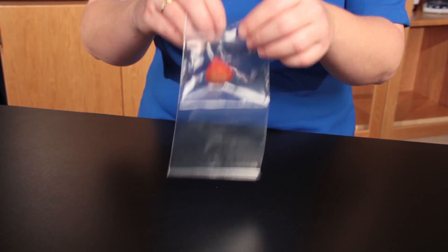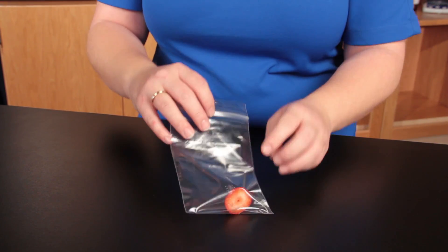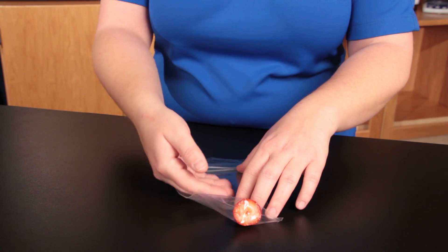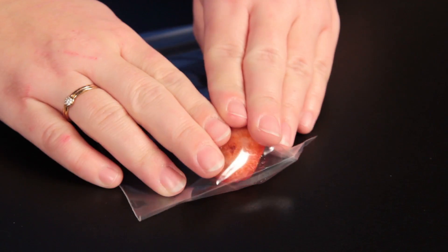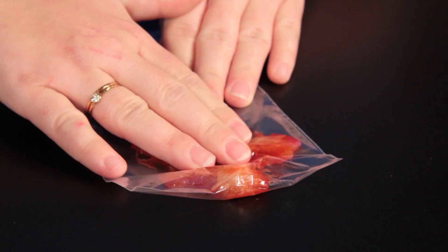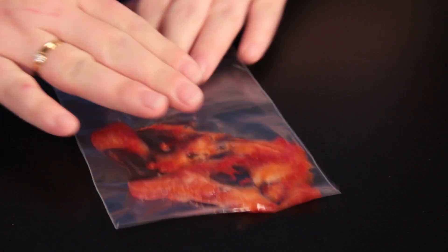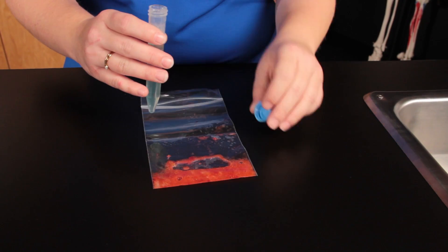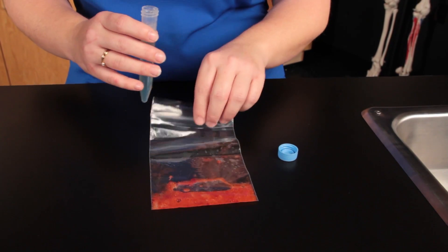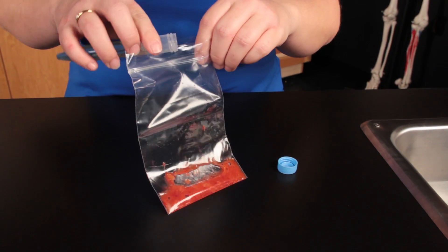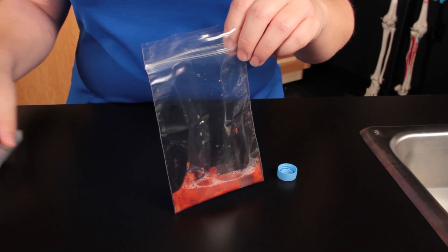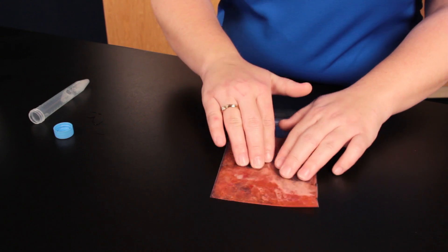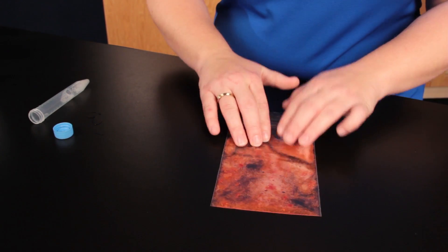Place half of a strawberry in a plastic bag, remove the air and seal it. Use your hand to smash the strawberry until it is pulverized. Add 10 milliliters of DNA extraction buffer to the bag. Continue to smash the strawberry for one more minute.